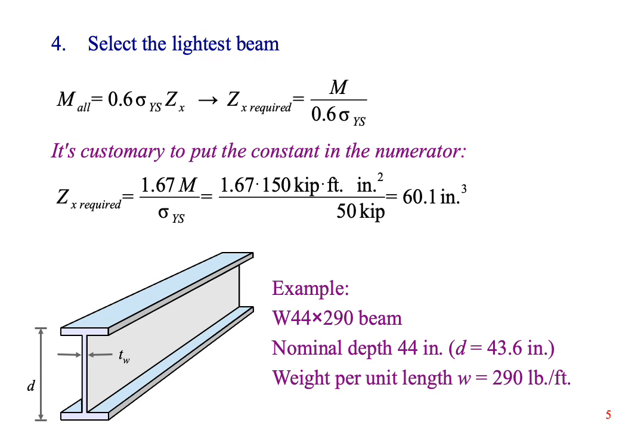We look in Appendix D to find a beam with a Z value at least this big, but how do we know which one is the lightest? In the United States, wide-flange steel beams are sold by weight per unit length. W beams are designated with two numbers. The first number is the nominal depth, top to bottom, which is not always the actual depth. A W44 by 290 beam has a nominal depth of 44 inches and an actual depth of 43.6 inches. The second number is the weight per unit length. This beam weighs 290 pounds per lineal foot, so a 10-foot long section would weigh 2,900 pounds.